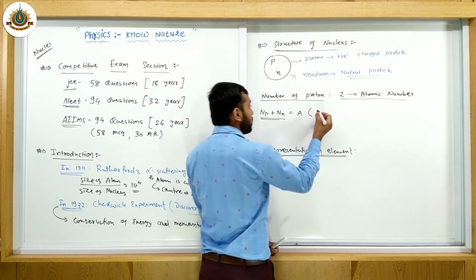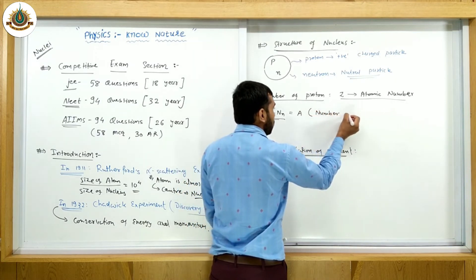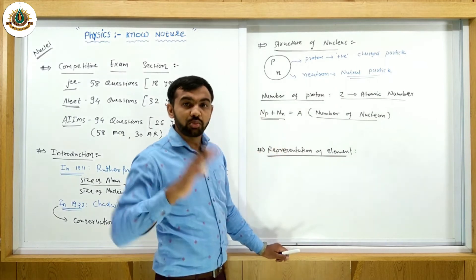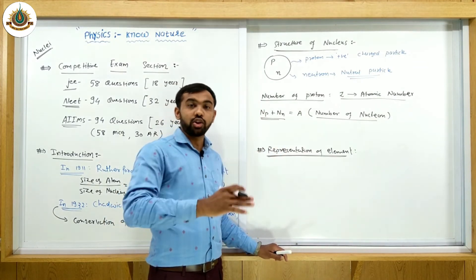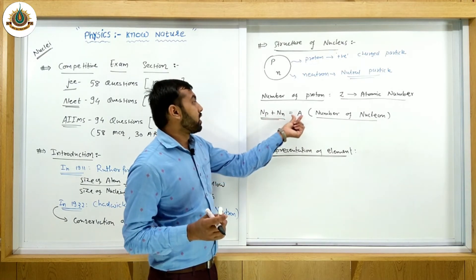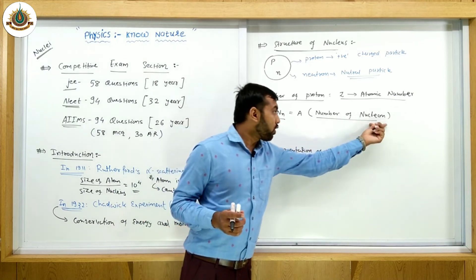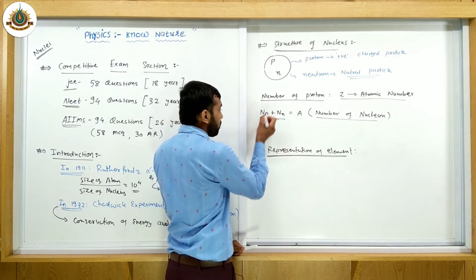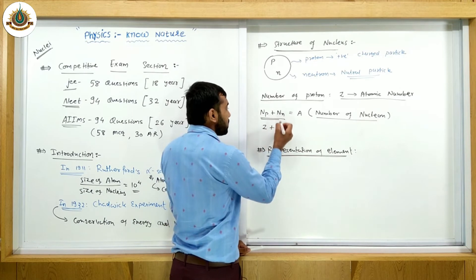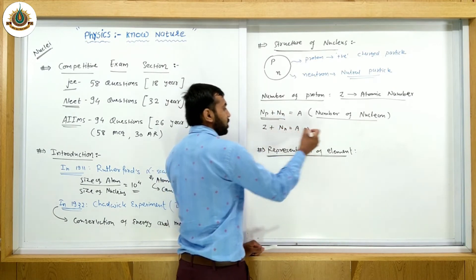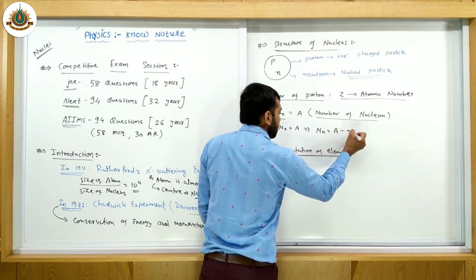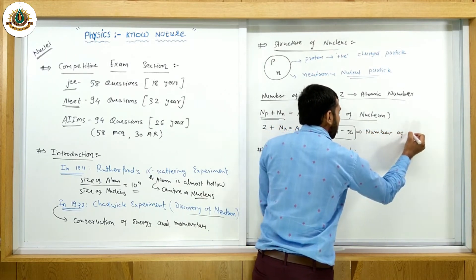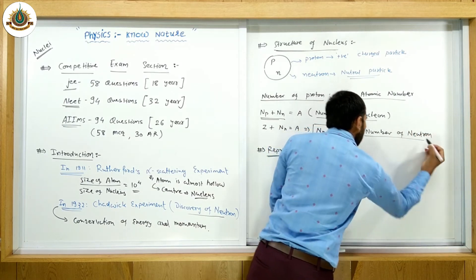The total number of protons plus neutrons is called the number of nucleons, denoted by A. This A is sometimes also called the atomic mass number of the nucleus. The number of neutrons is then denoted as N = A − Z. So the number of neutrons equals A minus Z.